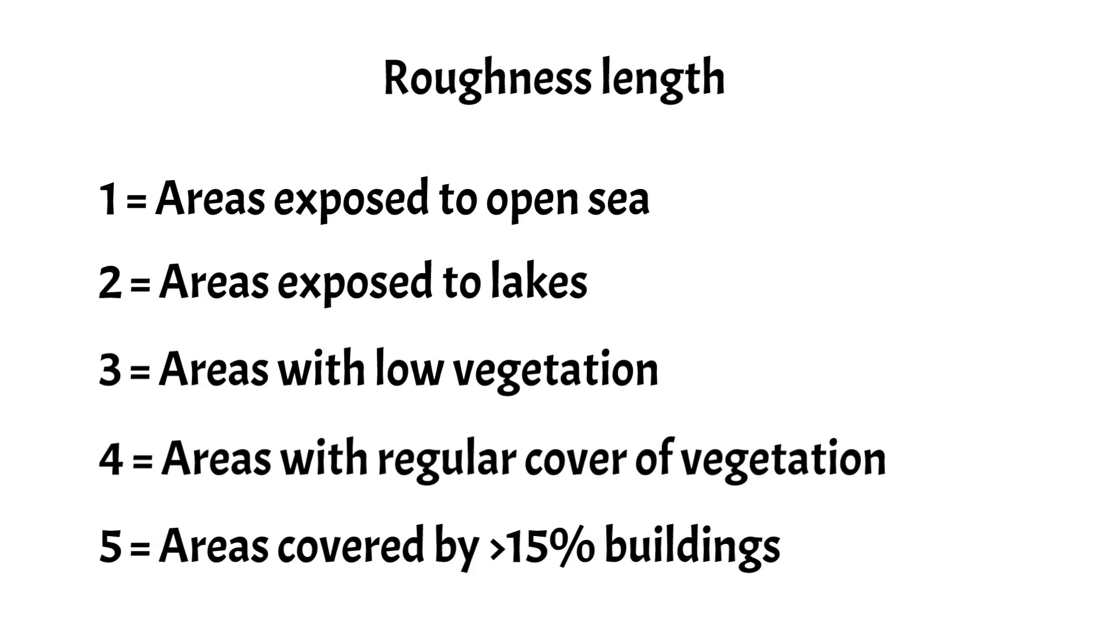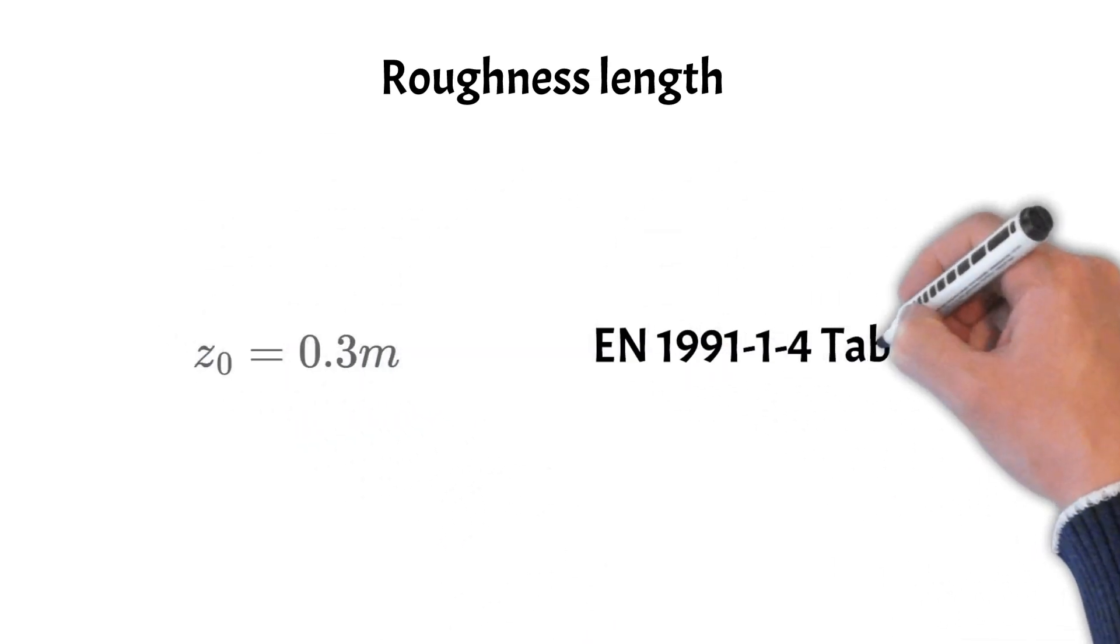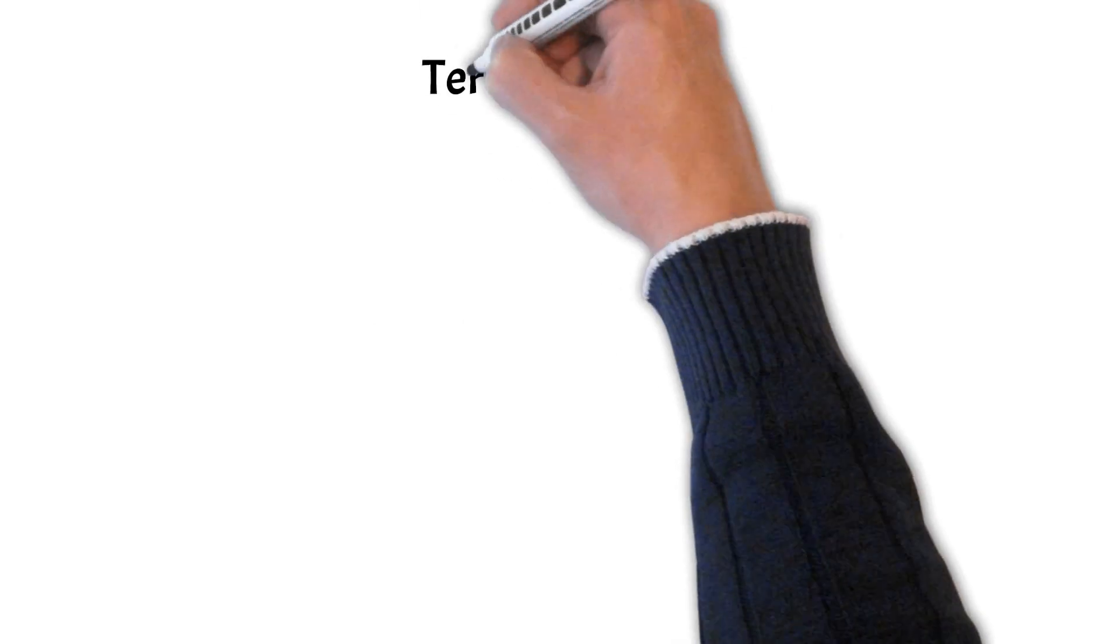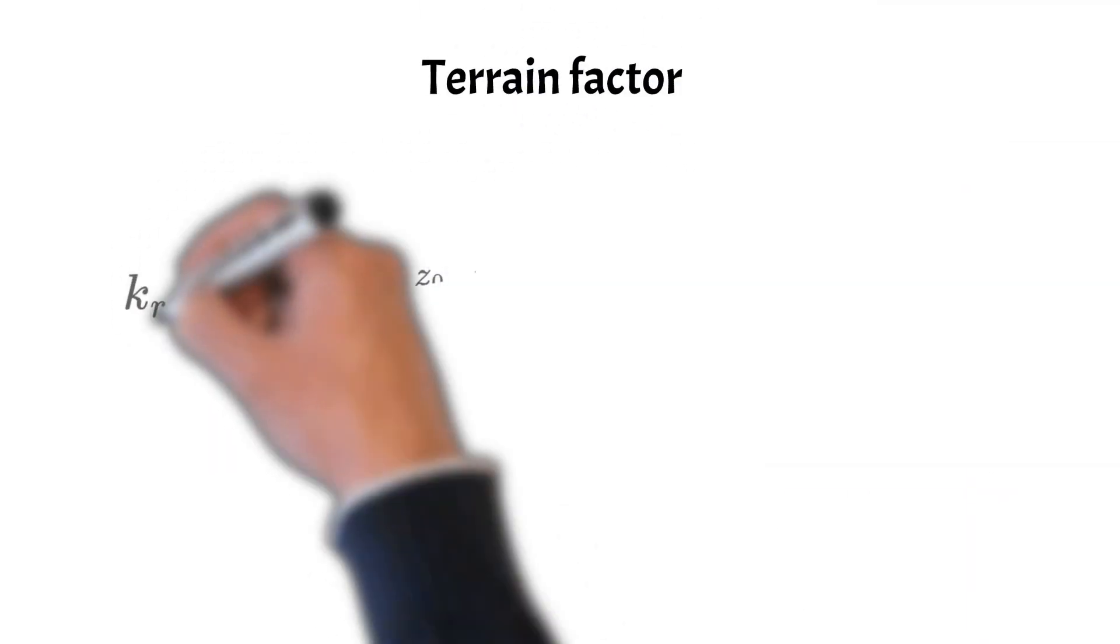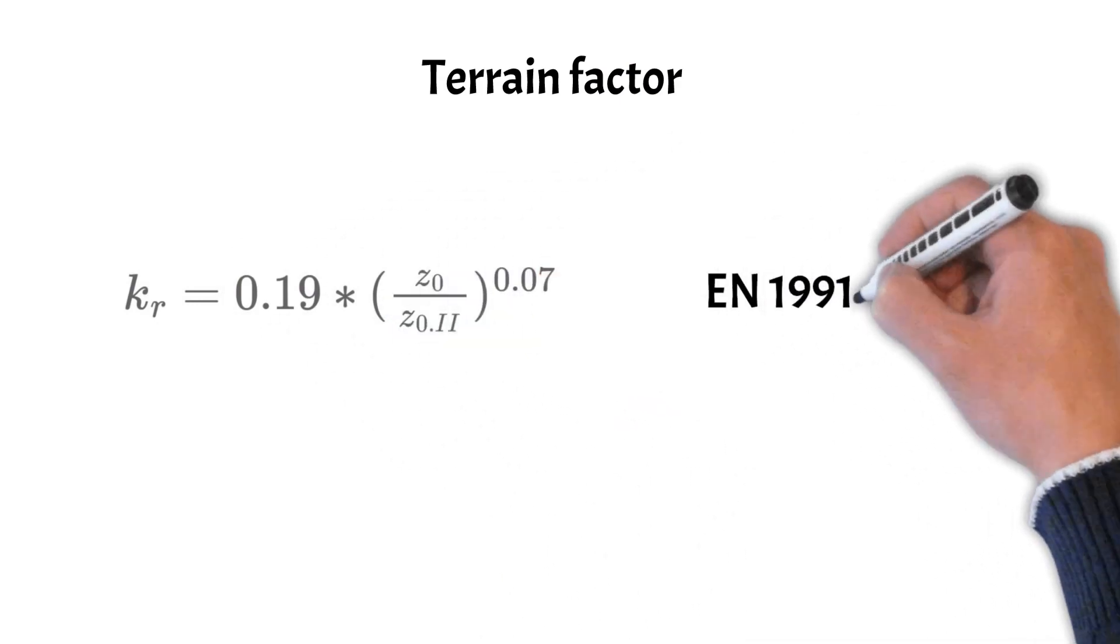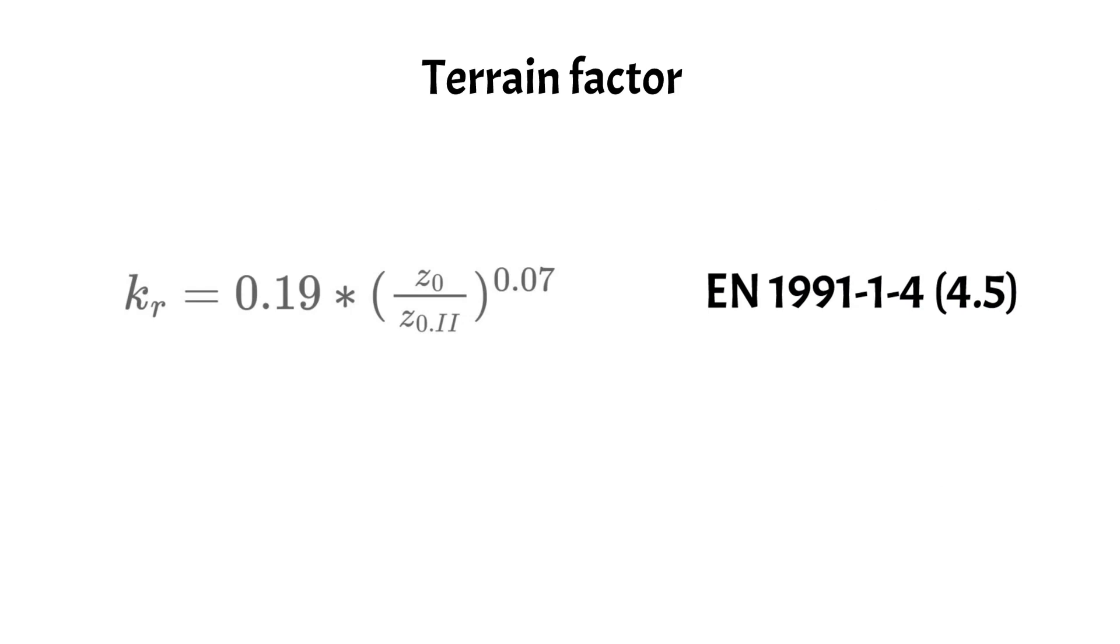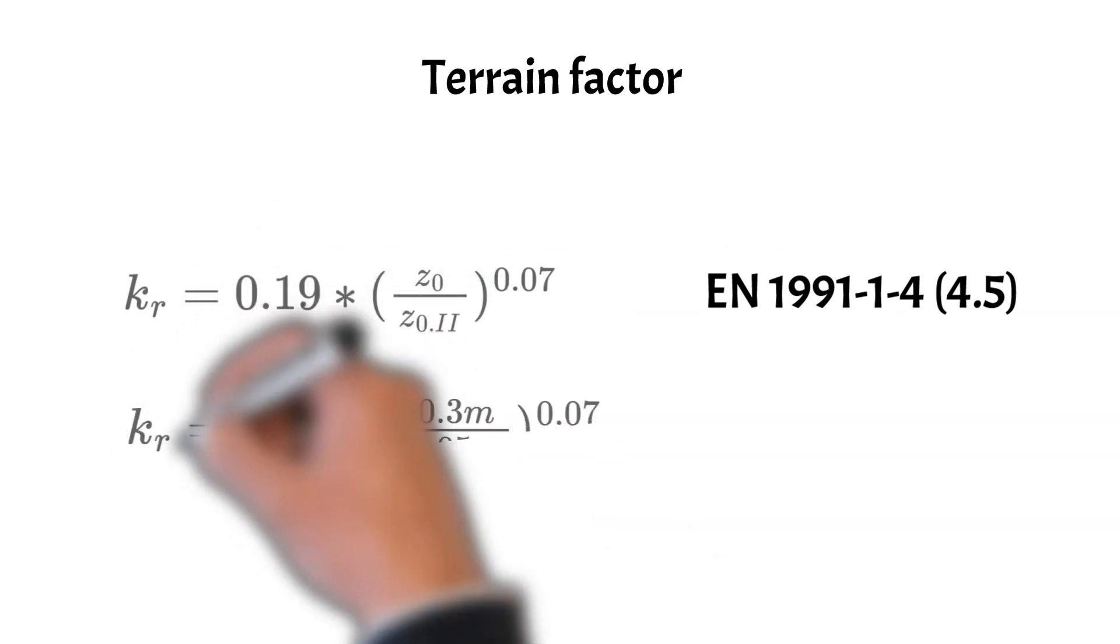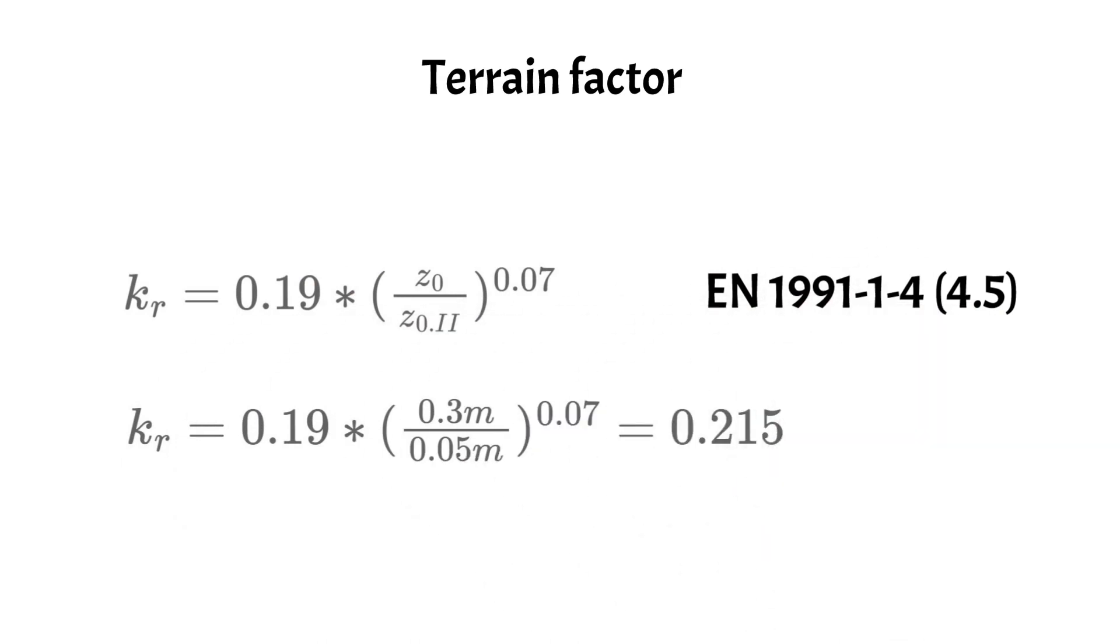In our case we assume that our office building is located in a suburban terrain with regular cover of buildings. Therefore, the building falls into terrain category 3 and the roughness length Z0 is 0.3 meters. Finally we can calculate something. The terrain factor KR is calculated as 0.19 times Z0 divided by Z0 terrain category 2 to the power of 0.07. Inserting the values of Z0 and Z02 leads to a value of KR of 0.215.